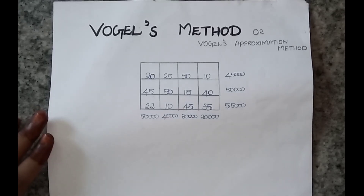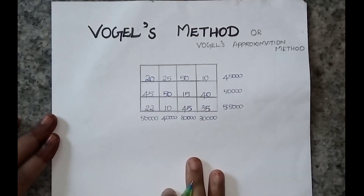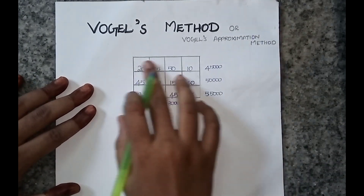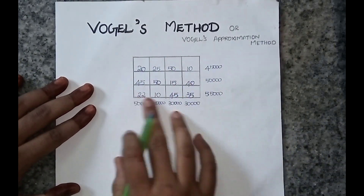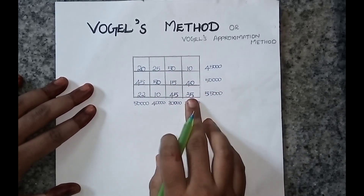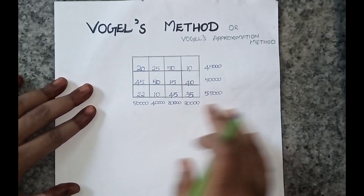Welcome to MB's Academy. In this video we are going to learn Vogel's Approximation Method. Without any delay let us quickly jump into the question. In this question there are three rows and four columns, and it has demand and supply.